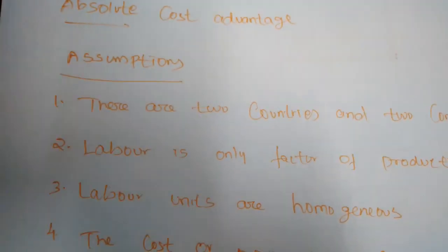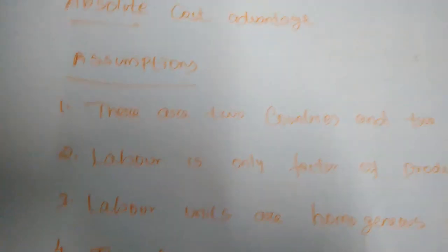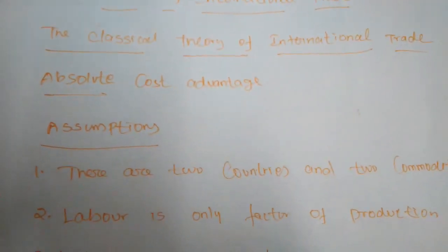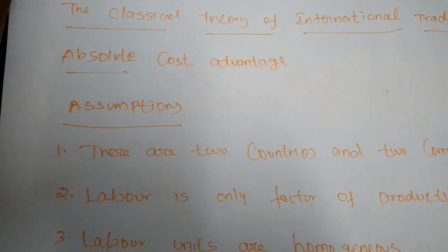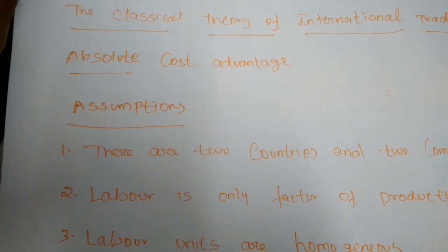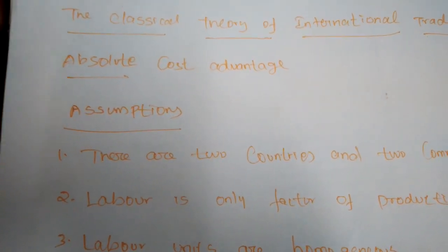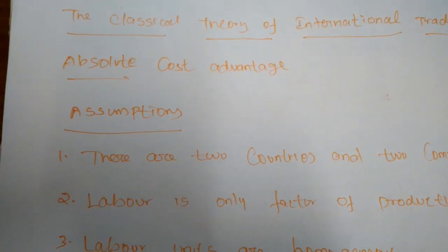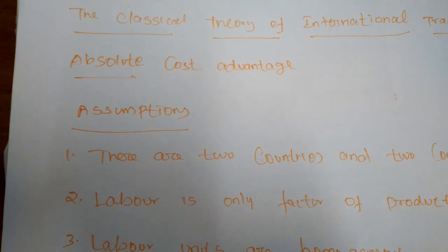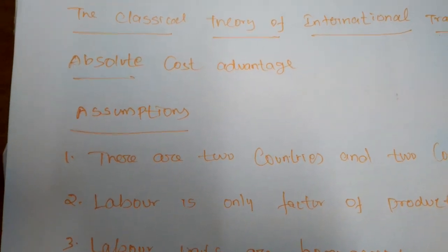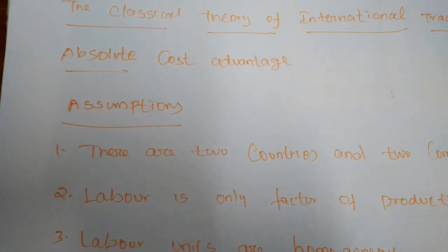Adam Smith developed the theory of absolute cost advantage. The absolute cost advantage was developed by Adam Smith in 1776 and was formulated as an explicit and precise theory by David Ricardo. After that, this theory was improved by economists like J.S. Mill, Taussig, and Haberler.